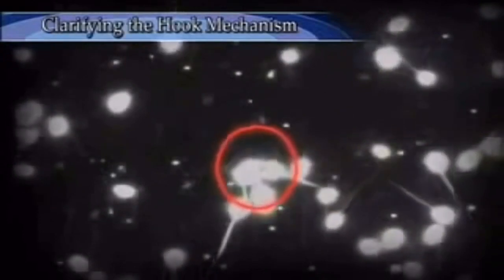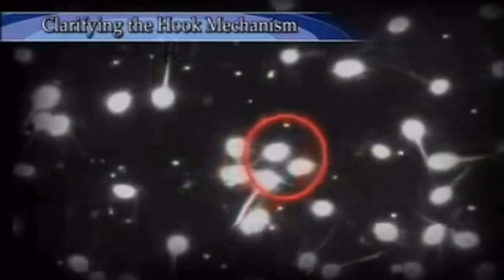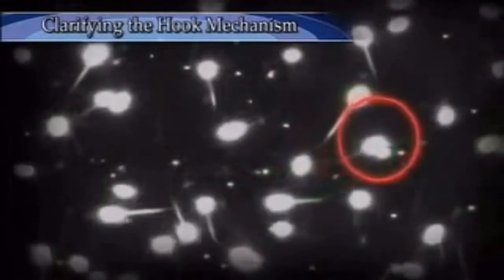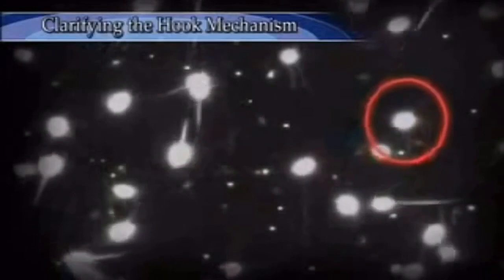The hook acts as a universal joint so that the torque can be transmitted regardless of the orientation of the flagellar filament. Bacteria can swim about freely because of this.